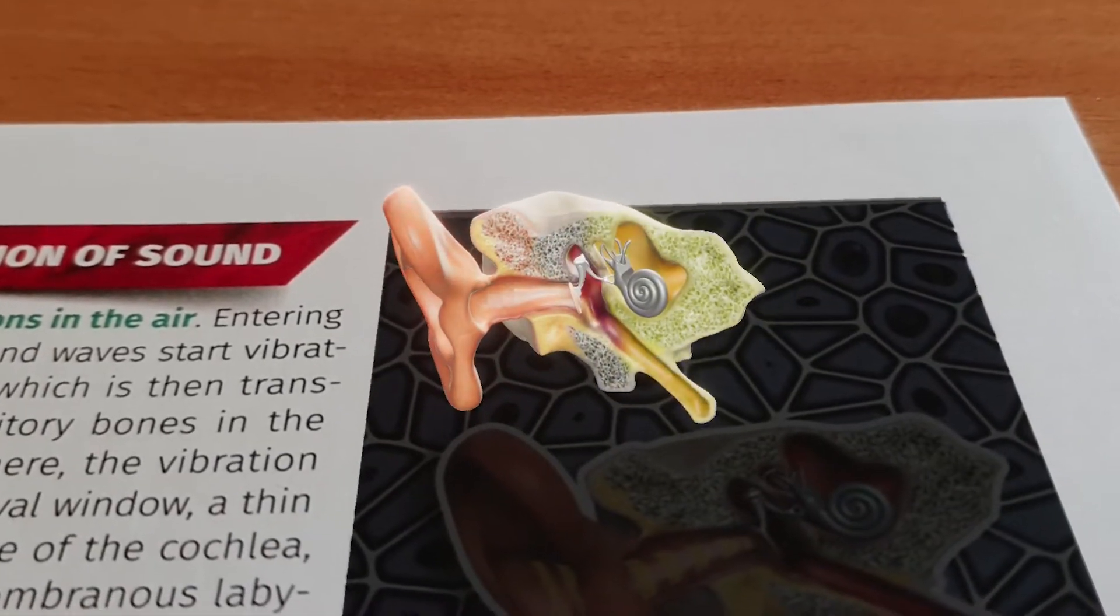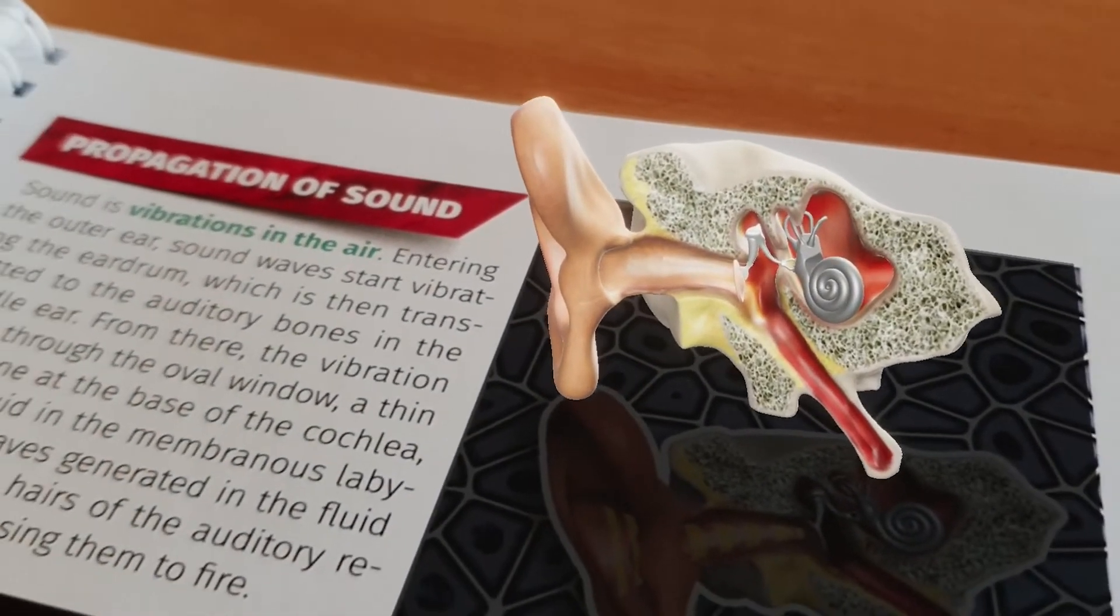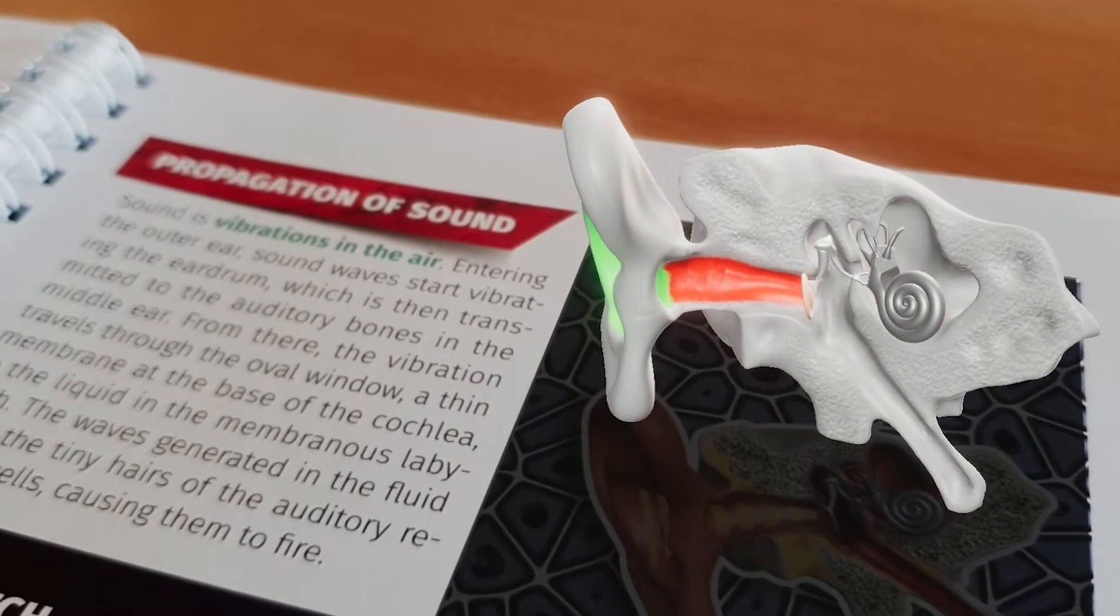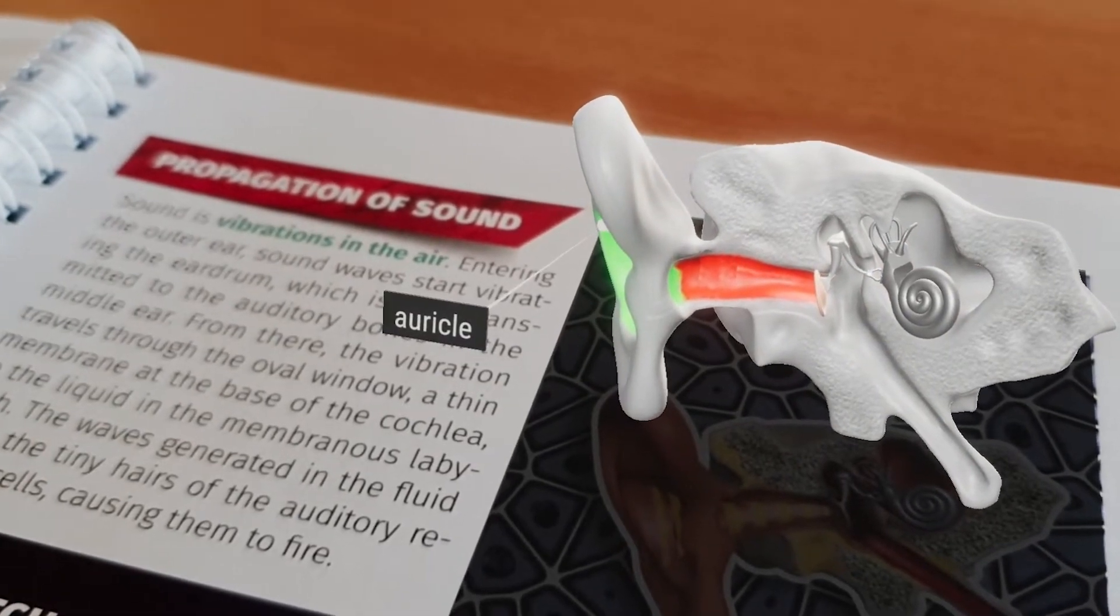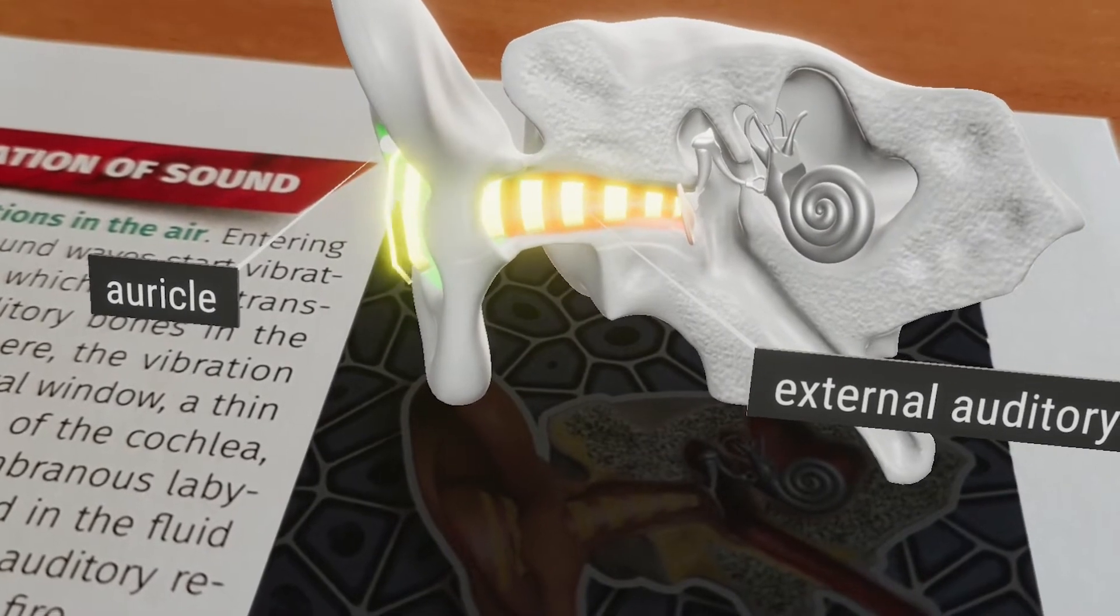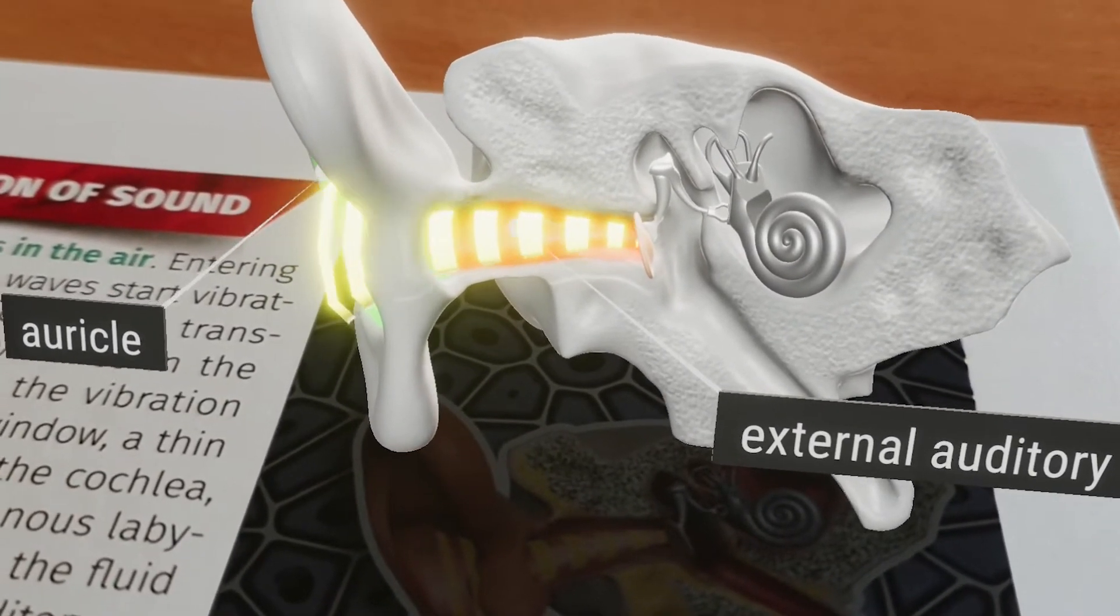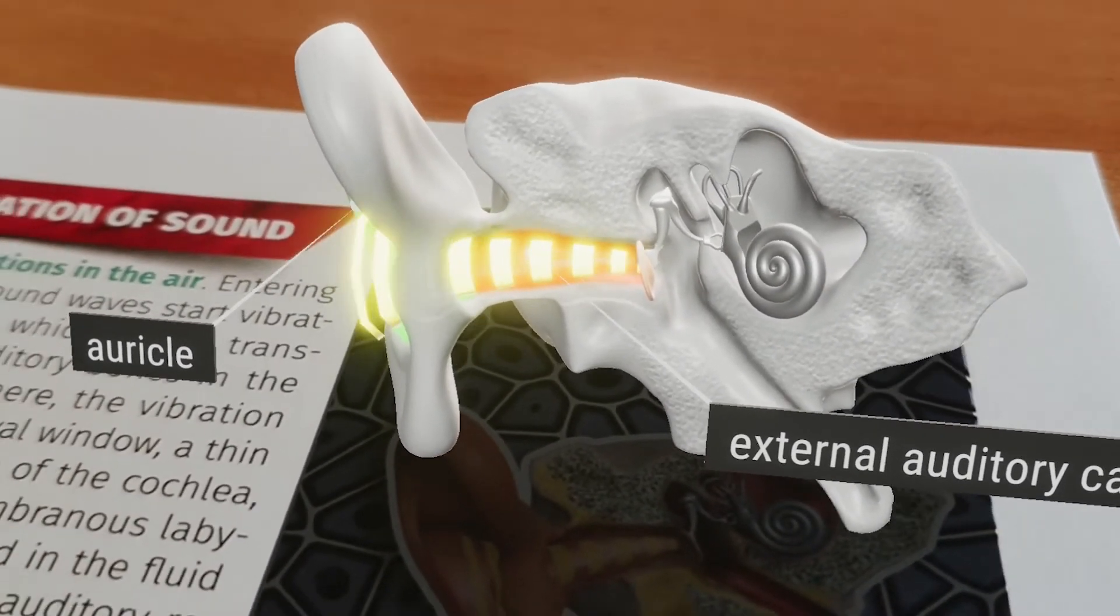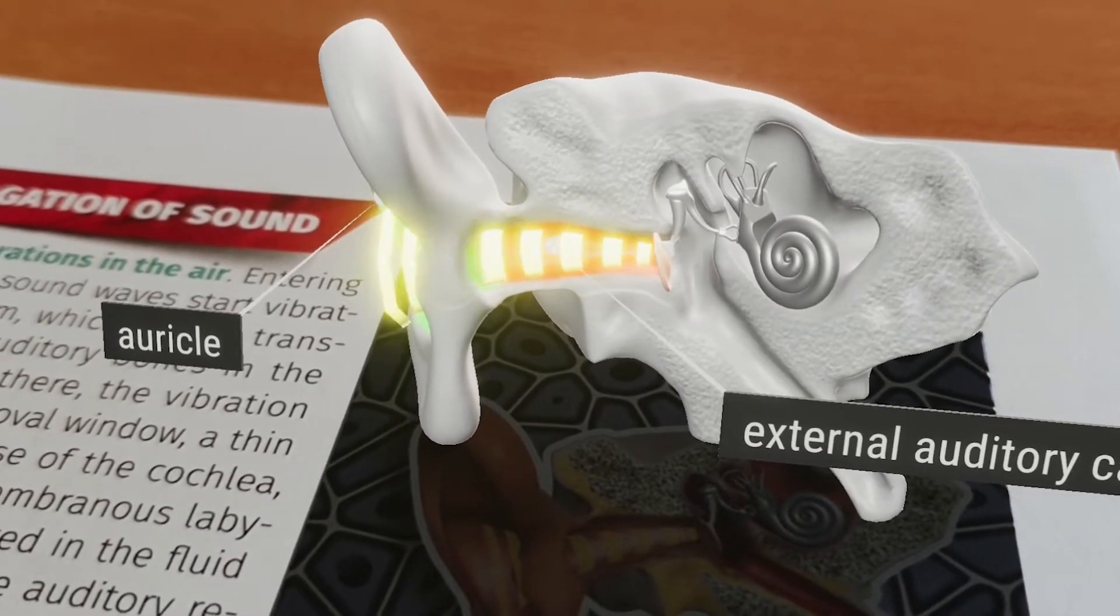The outer ear, moving from the outside to the inside, is made up of a funnel-like auricle and the external auditory canal. Formed of cartilage, the auricle is responsible for collecting and transmitting vibrations of air to the middle ear.